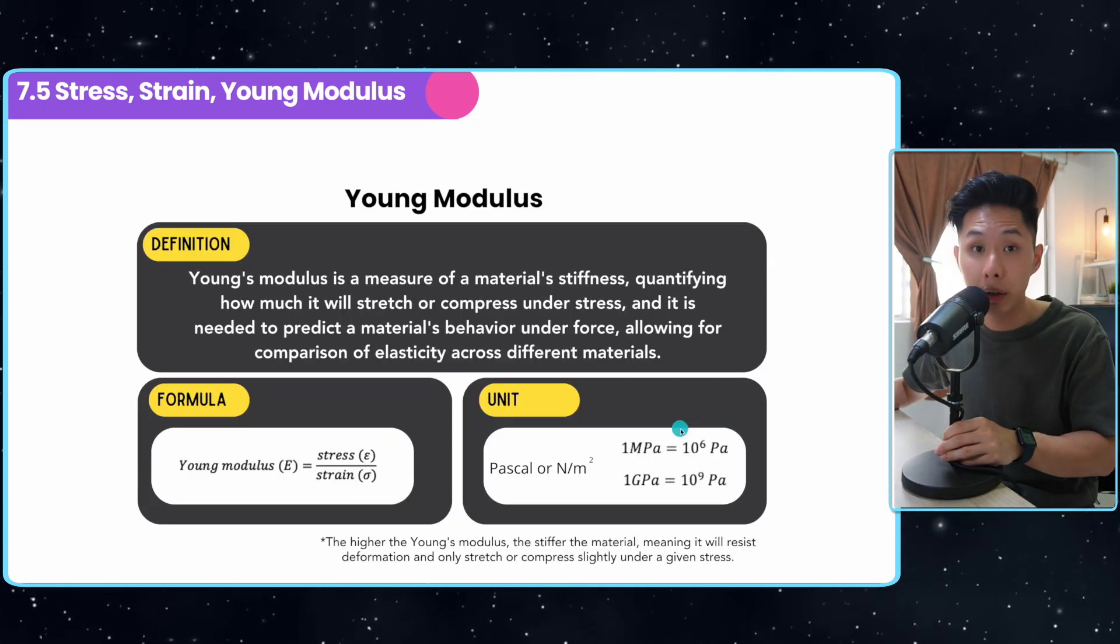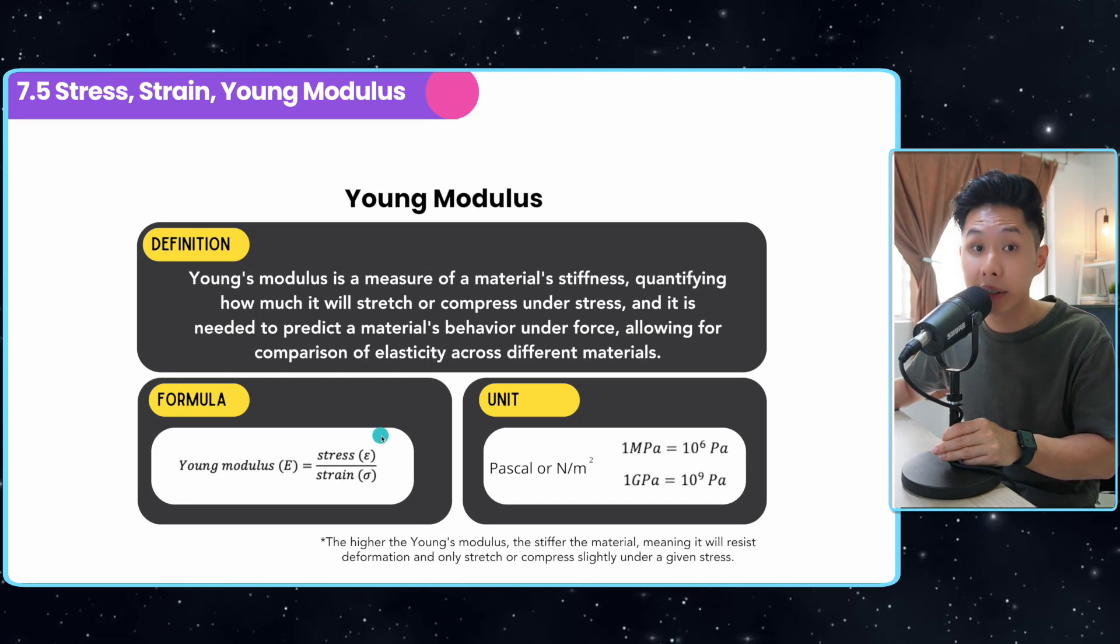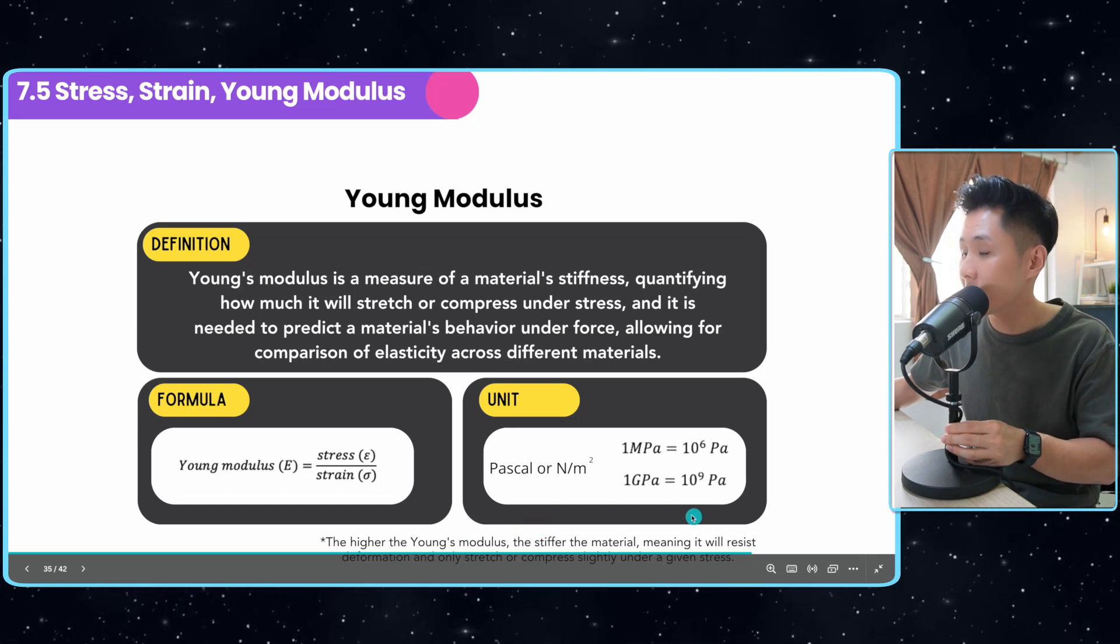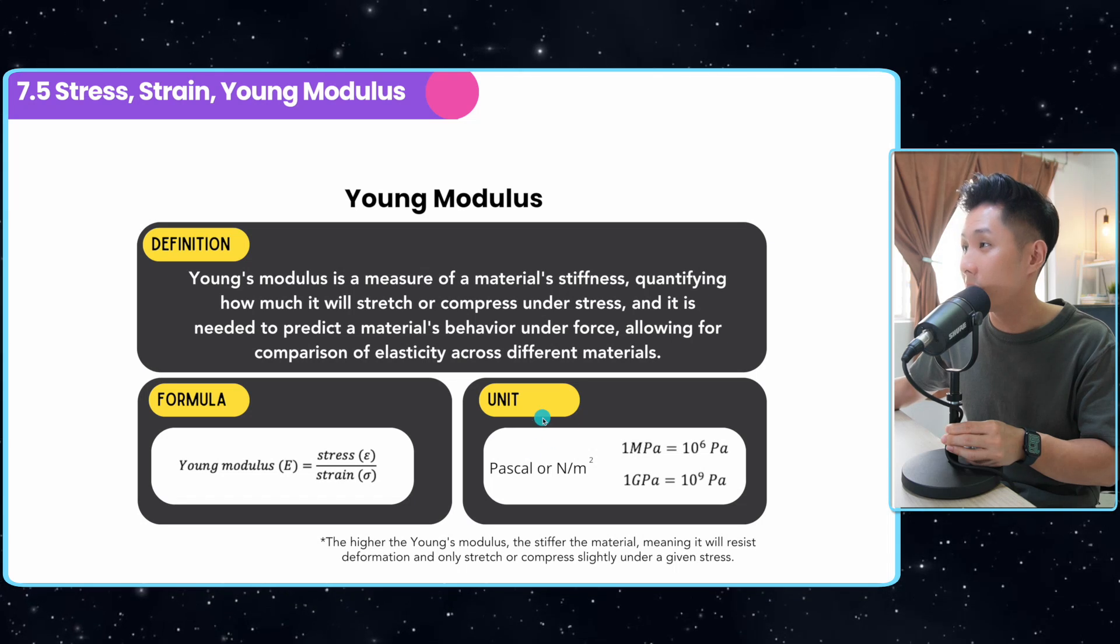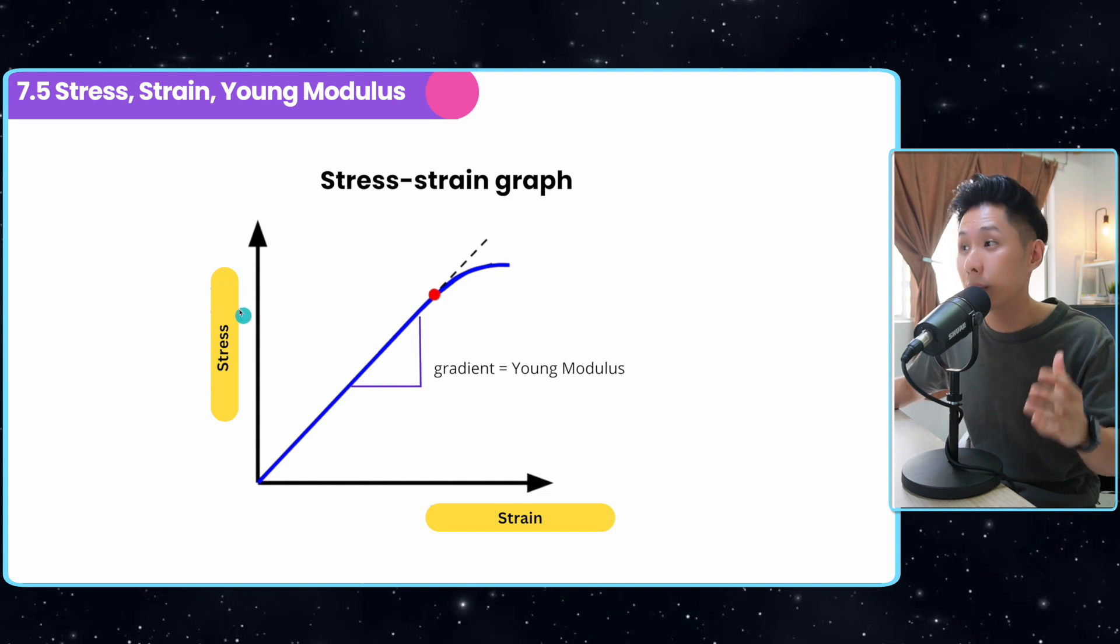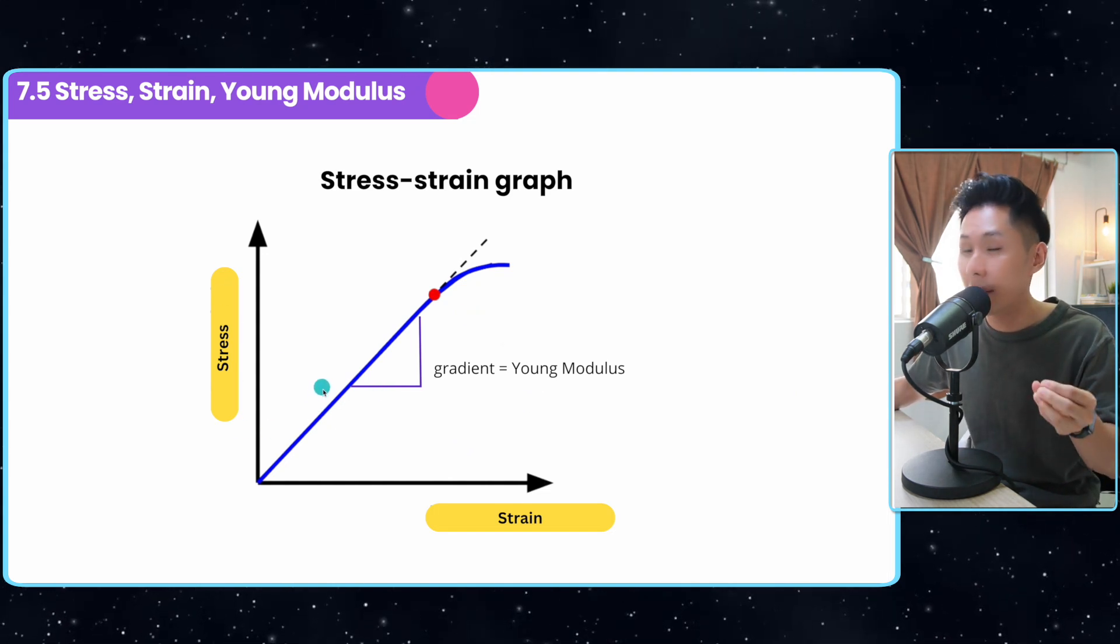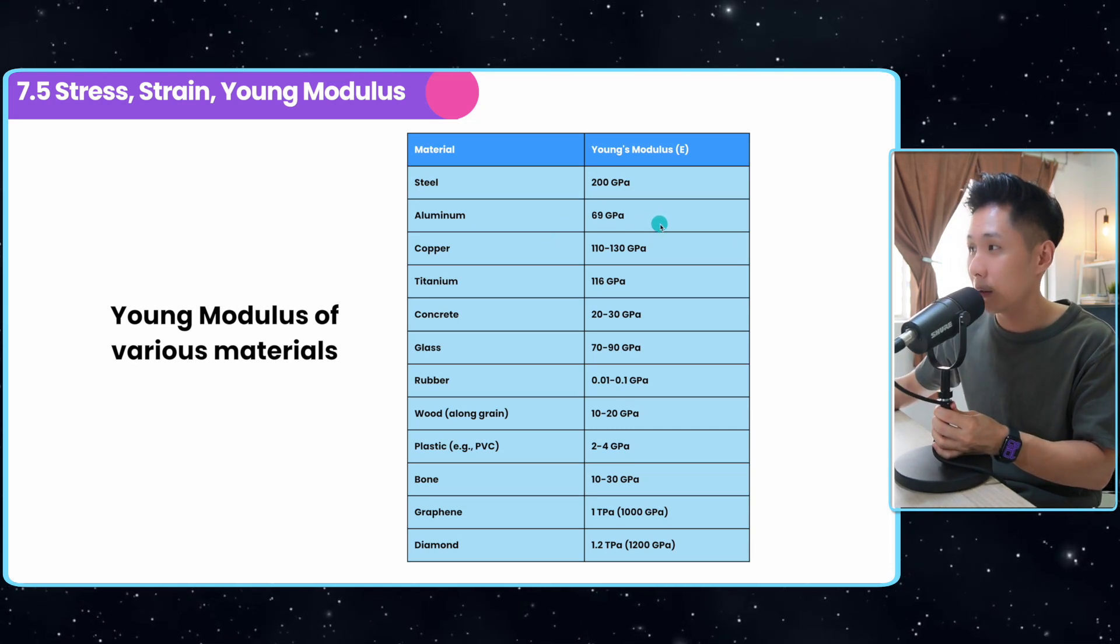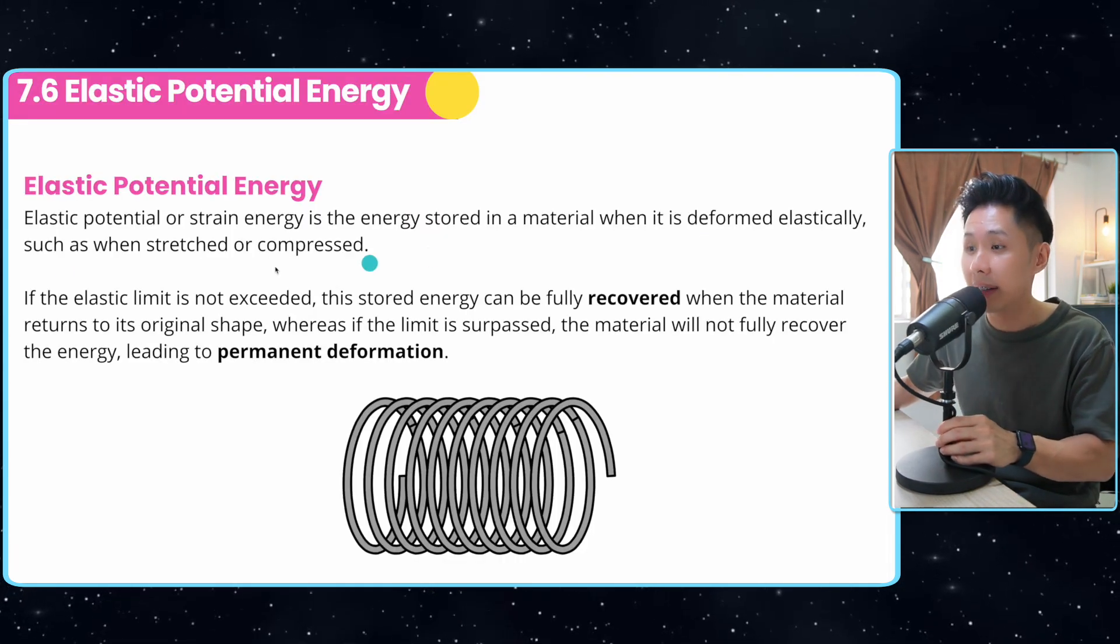This leads us to Young's modulus, which uses both the stress and strain quantity to help us to measure a material's stiffness. In this case, the higher the Young's modulus, the stiffer the material, meaning it will resist deformation, and only stretch or compress slightly under a given stress. The unit of Young's modulus is pascal. If you look at a stress and strain graph, you can see it's very similar to a load extension graph. If you find a gradient of it, you would have found out the Young's modulus. This is the Young's modulus of various materials. The higher the value, the harder it is to stretch them. That's it for stress, strain, and Young's modulus.